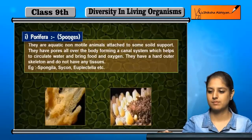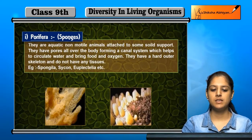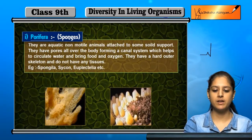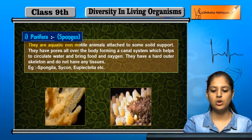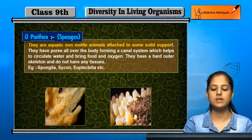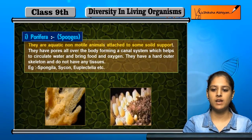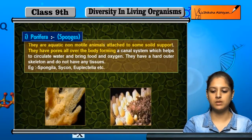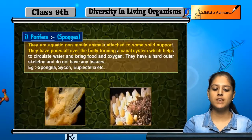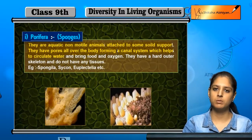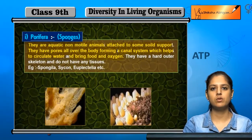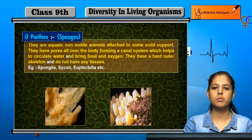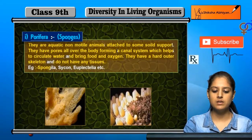Let us discuss the types of Animalia animals one by one. First is Porifera, also known as sponges. They are aquatic, non-motile animals attached to some solid support. They have pores on their entire body which make a canal system, causing circulation of water through the body, bringing in food and oxygen. They have a skeleton on the outside and no tissues. Examples are Spongilla, Sycon, and Euplectella.